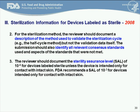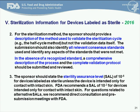Moving on to item number two — in the 2008 draft, we were looking for a description of the method used to validate the sterilization cycle, but not the validation data itself, and we asked you to identify all relevant consensus standards. In the 2016 final version, we're asking for a description of the method used to validate the sterilization cycle, not the validation data, but all relevant consensus standards, and in the absence of recognized standards, a comprehensive description of the process and a complete validation protocol. Item number three — we're looking for the sterility assurance level, and that really hasn't changed.